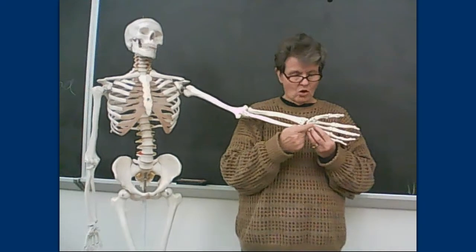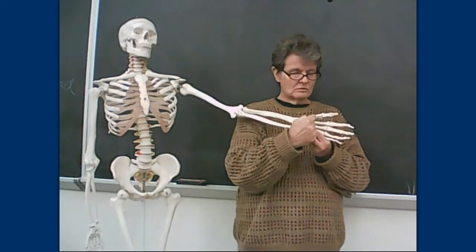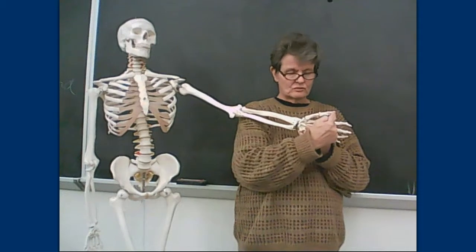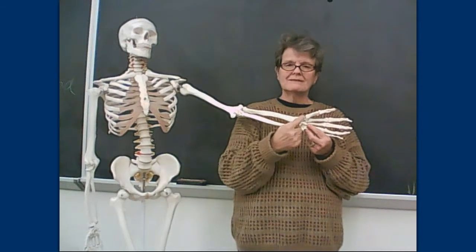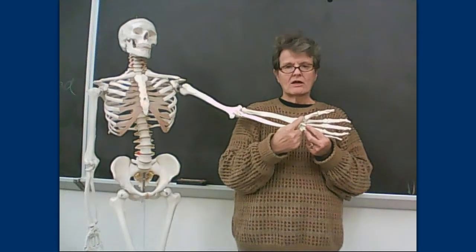So remember that the thumb only has the proximal phalanx and the distal phalanx. All the other fingers have a middle phalanx. The thumb, distal phalanx, proximal phalanx, and here would be the metacarpal, the carpals of the wrist. Looking on this guy. Carpals, metacarpal, proximal phalanx, distal phalanx. Now right here at the base of the metacarpal and the carpal would be the saddle joint of the thumb. It gives us our dexterity and separates us from other species.